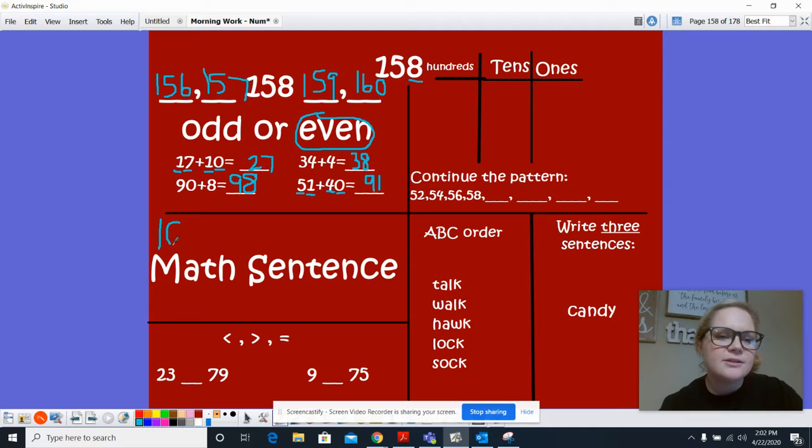All right. Math sentence. 100 plus 50 plus 8 equals 158. 23 is less than 79. 9 is less than 75.